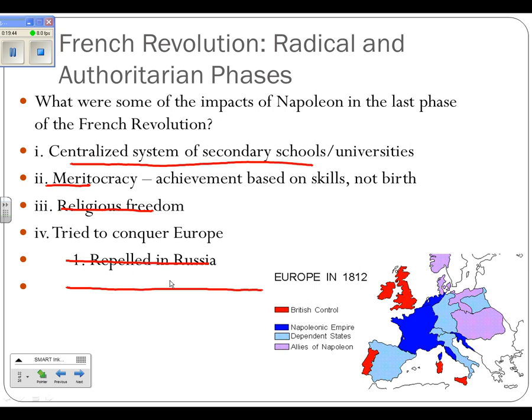Listen to these numbers. He leaves France and attacks Russia with an army of 500,000 men. He returns to France with an army smaller than 50,000 men. He lost over 450,000 men — either to death on the battlefield, starvation, disease, freezing, or in some cases desertion. So he returns from Russia a defeated man.